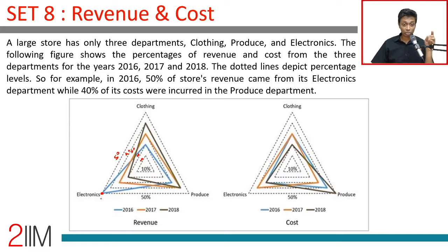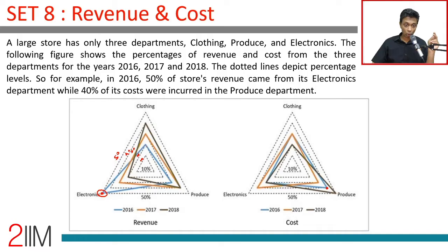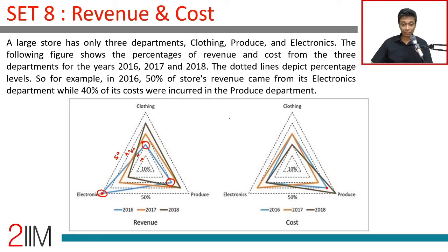40% of its cost — shown in blue — came from the produce department. So in 2016, electronics accounted for 50%, clothing for 20%, and produce for 30%, adding up to 100%. I don't like this weird depiction, but there are only six to nine data points and I'm going to capture all of them.